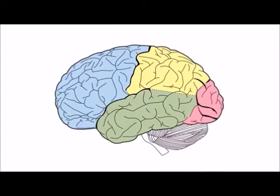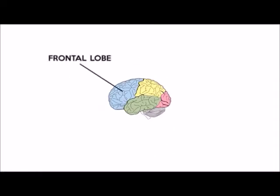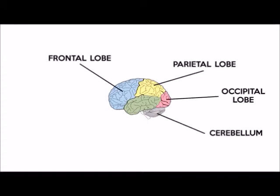Different parts of the brain have different functions. The main structures in the brain are the frontal lobe, the parietal lobe, the occipital lobe, the cerebellum, the temporal lobe, and the brain stem.